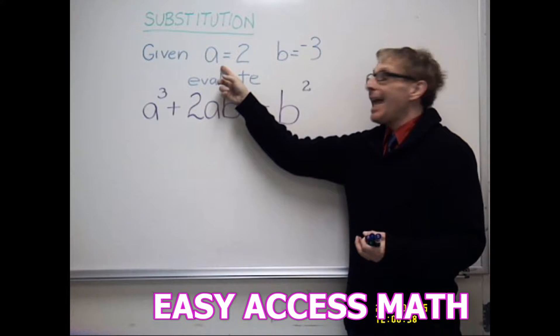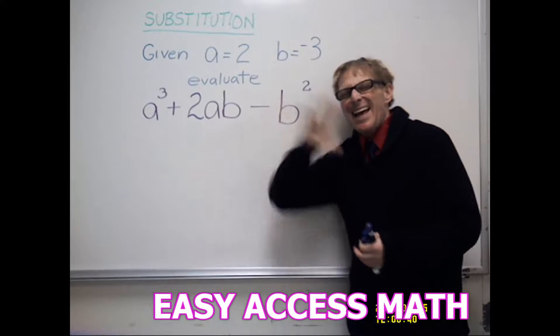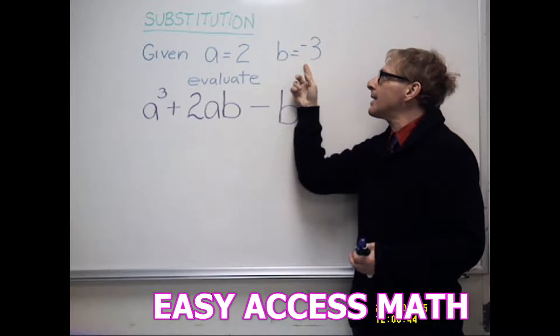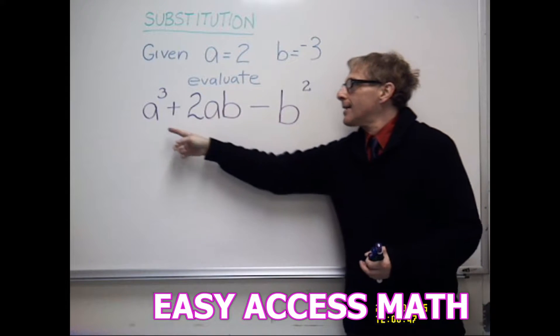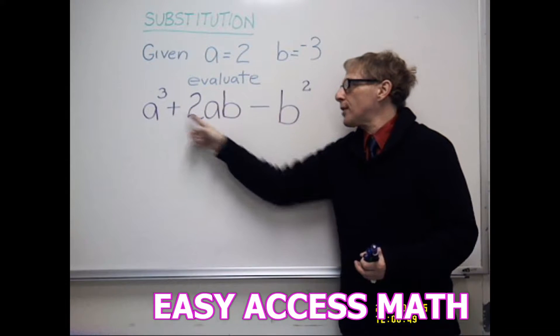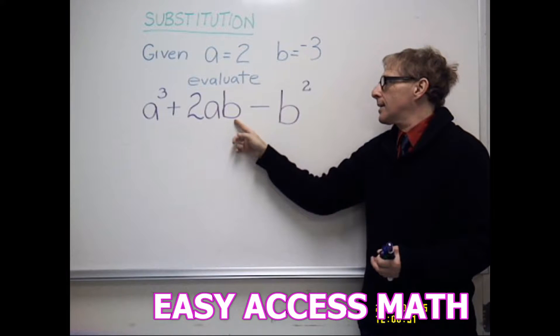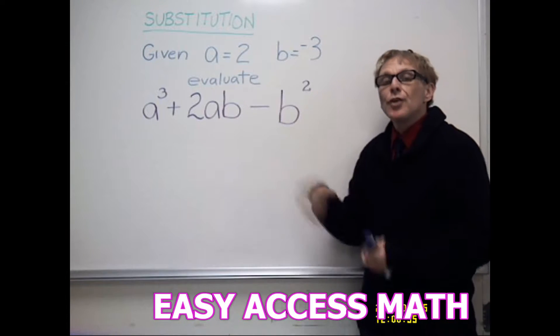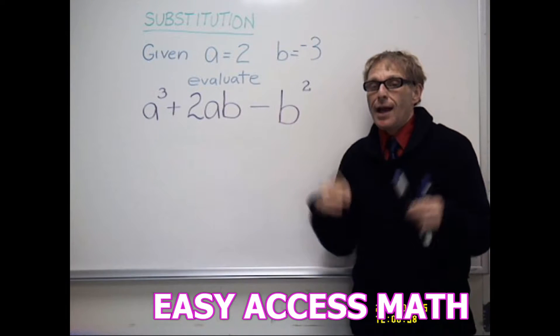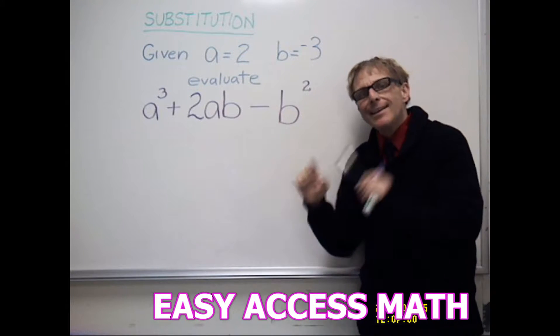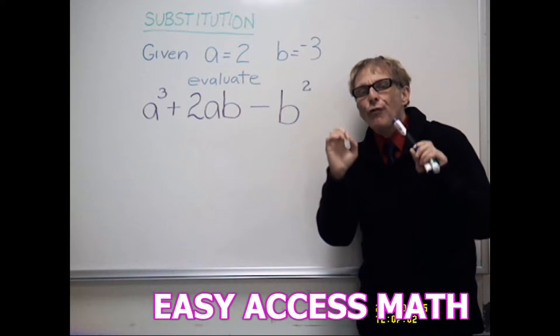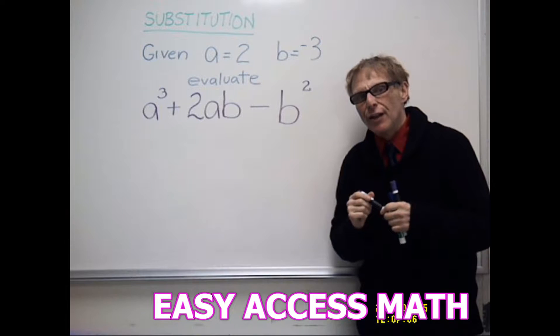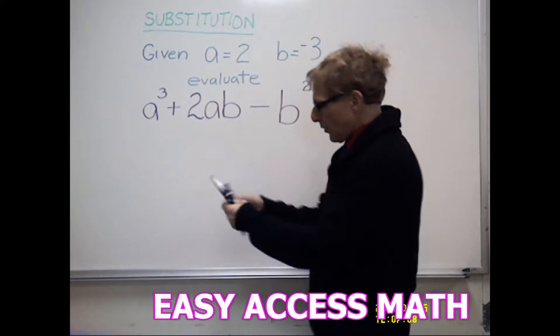We have given a equals 2, which means every a will equal 2, and b equals negative 3. Evaluate a to the third power plus 2ab minus b squared. So what we'll do first is substitute our numbers. I'll rewrite this with parentheses for the numbers to put in instead of the letter. So let's do that.